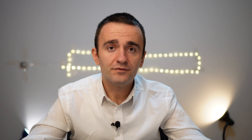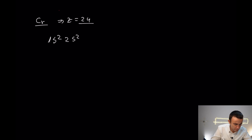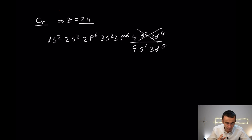Let's move to the exceptions, classified into two groups: a half-filled set of equivalent orbitals, and a filled set of equivalent orbitals. For the half-filled example, we take chromium with Z=24. According to Aufbau, it would be 4s² and 3d⁴, but experimentally it is proved to be 4s¹, 3d⁵. This happens to all elements along this group.